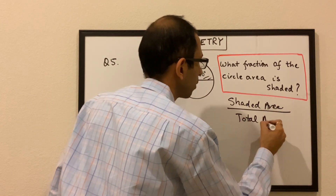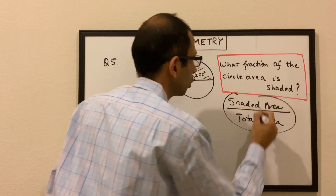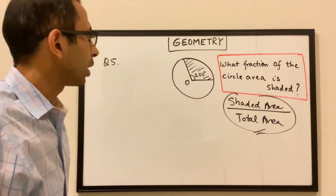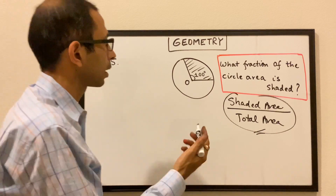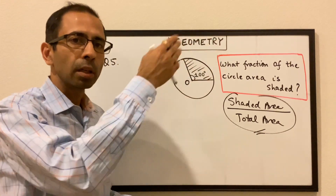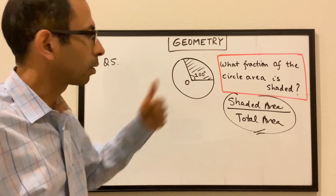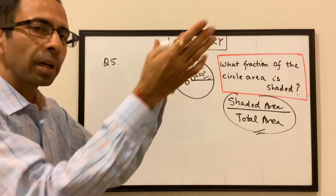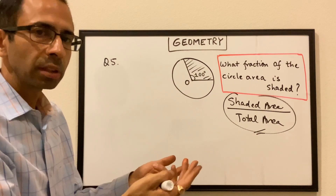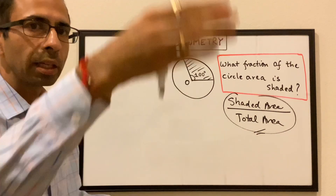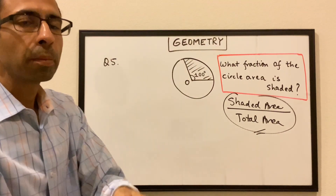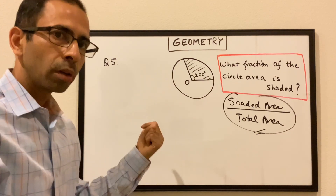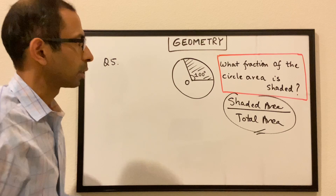For example, if you have 10 apples and we eat 3 apples, what fraction of the apples have we eaten — it's 3 over 10. In the same way, when somebody asks what fraction of the circle area is shaded, they are asking for the ratio of the shaded area to the total area. We have learned in the past that like the circumference, even the area of the circle goes in the same proportion as the central angle.